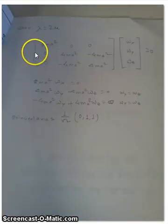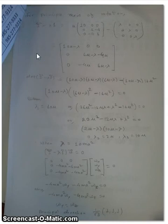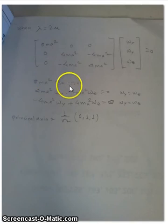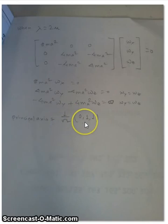Similarly for the second eigenvalue, λ₂ equals 2μ, I'll have ωx equals 0 and ωy equals ωz. So again, the principal axis in that case is going to be 1 over the square root of 2 times (0, 1, 1). And that's it. That's how you find eigenvalues and principal axes.